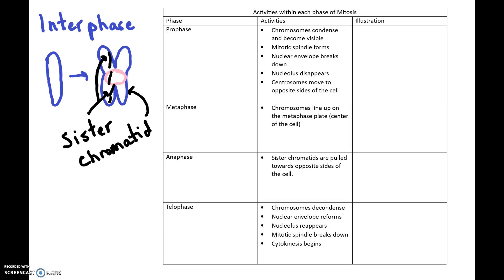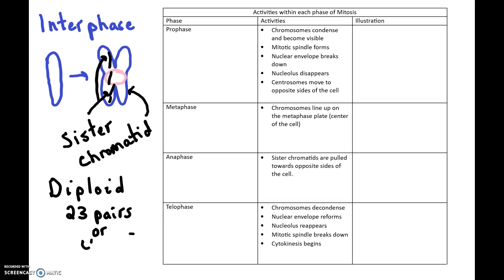That's how the chromosomes will exist once we get to prophase. Remember, there are 46 of them. Because each cell has 46 chromosomes — 23 pairs — it's referred to as a diploid cell. A diploid eukaryotic human cell is going to have 23 pairs of chromosomes, or 46 total.